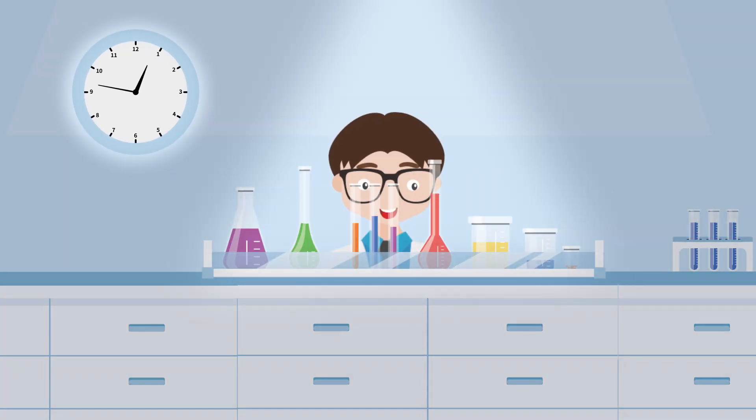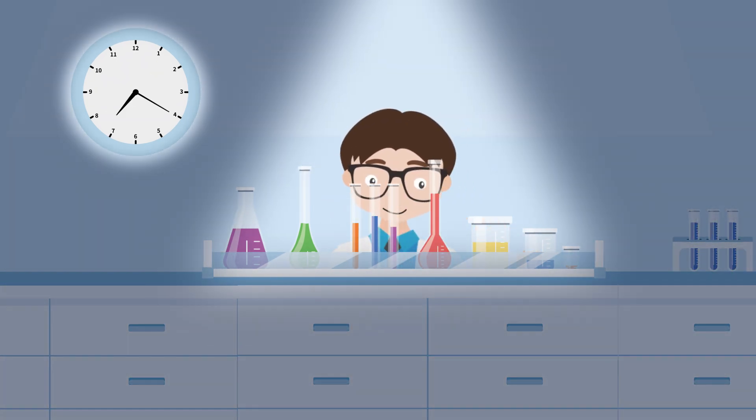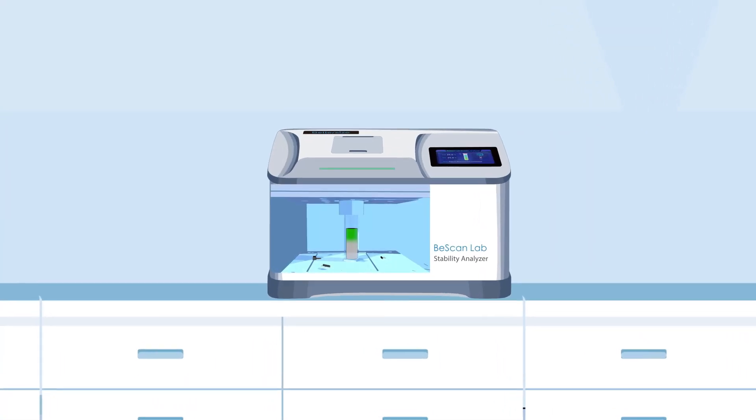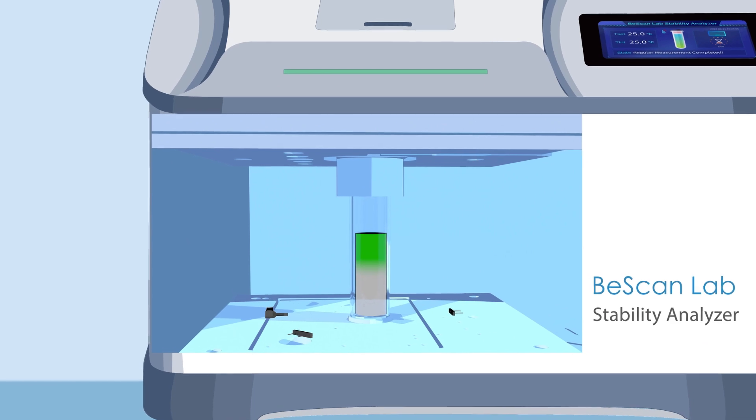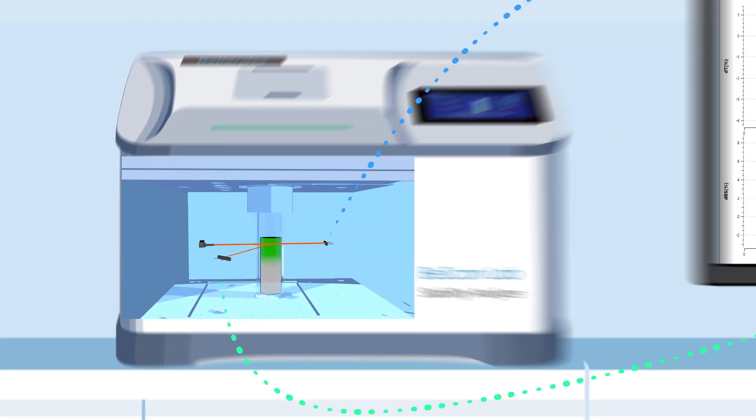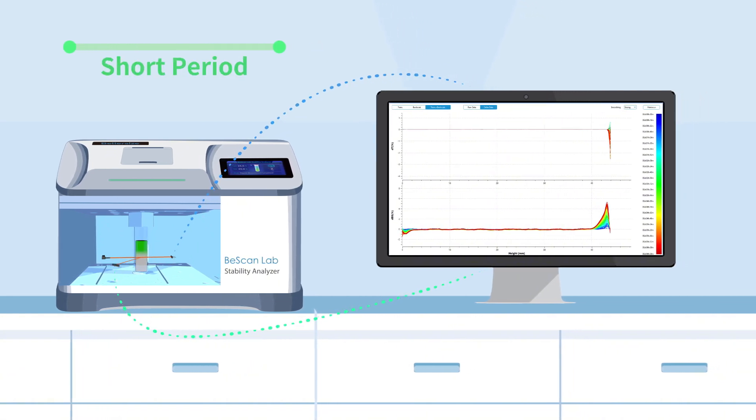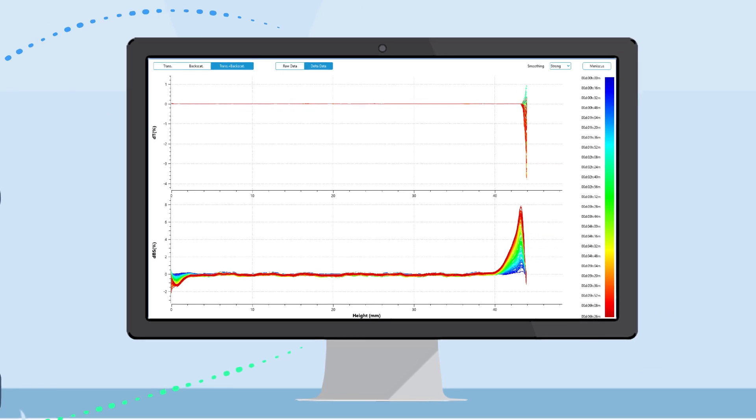Traditionally, physical stability assessment relied on visual observation, which is time-consuming and subjective. However, with the introduction of stability analyzers, we can promptly identify potential physical destabilizations by examining light signal changes using static multiple light scattering techniques.